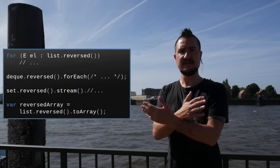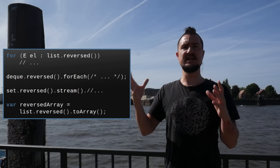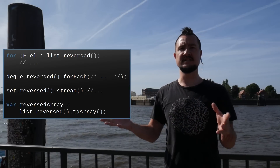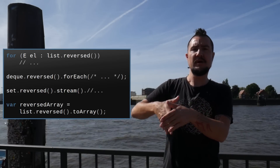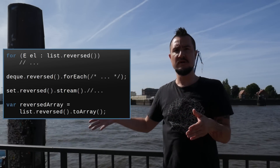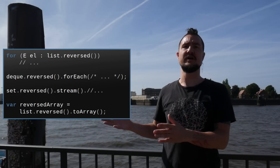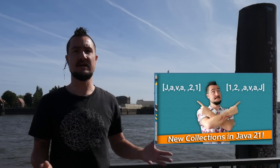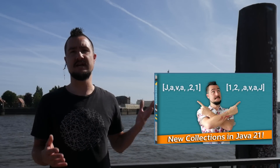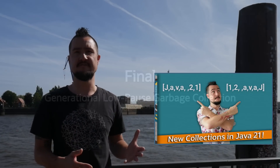It also has a method reversed() that returns a SequencedCollection that is a view on the underlying collection, but in reverse order, which makes it super easy to iterate or stream over. If you want to learn more about that, the companion interfaces SequencedSet and SequencedMap, and a few odds and ends, check out Inside Java newscast number 45.